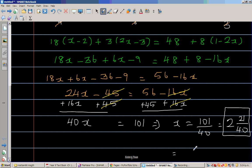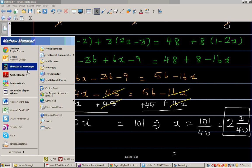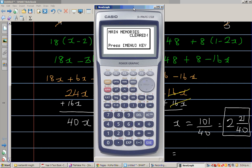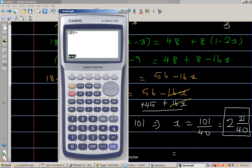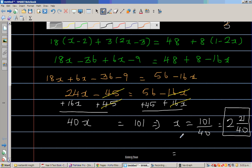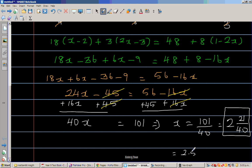So if you want to write this as a decimal, let us use a calculator. So this is 101 divided by 40. That is 2.525. So this is 2.525 is the answer in the decimal and in a fractional or in a mixed form.